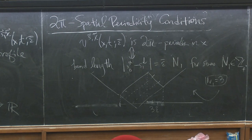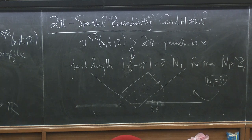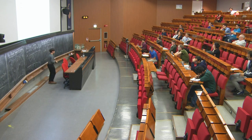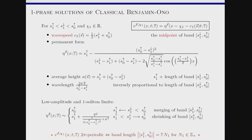More can be read off from these profiles. The average height of the wave is given by the center of the band. The wavelength is proportional to epsilon-bar but also inversely proportional to the length of the band. If you shrink the band, the wavelength diverges and you get a one-soliton. This one-soliton, you can also see, becomes constant as epsilon-bar goes to zero. In the other limit, if instead of shrinking the band you allow the bands to merge, you approach a constant.